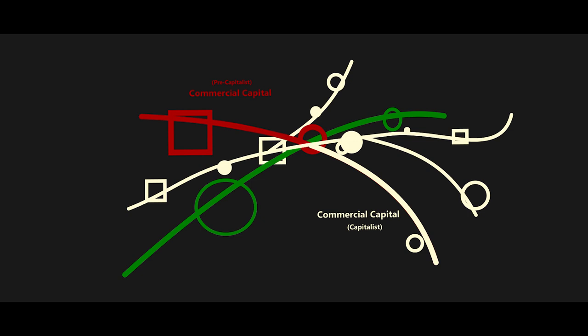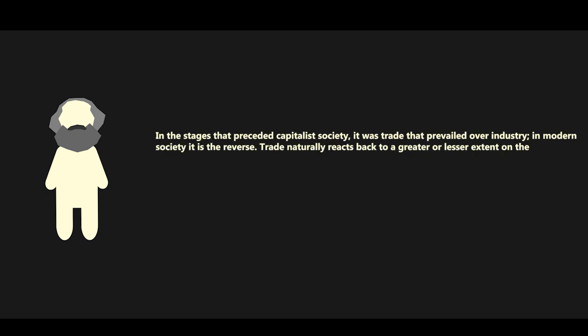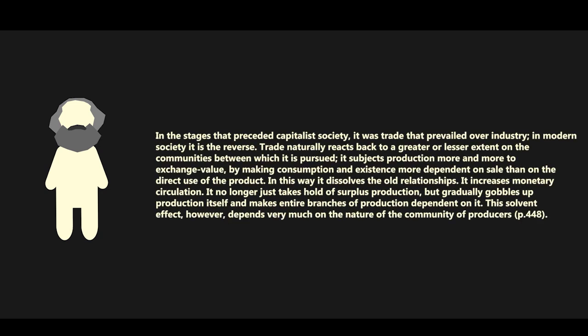In the same chapter, Marx writes: In the stages that preceded capitalist society, it was trade that prevailed over industry. In modern society, it is the reverse. Trade naturally reacts back to a greater or lesser extent on the communities between which it is pursued. It subjects production more and more to exchange value, by making consumption and existence more dependent on sale than on the direct use of the product. In this way, it dissolves the old relationships. It increases monetary circulation. It no longer just takes hold of surplus production, but gradually gobbles up production itself and makes entire branches of production dependent on it. This solvent effect, however, depends very much on the nature of the community of producers.